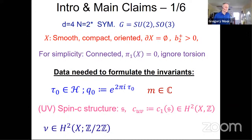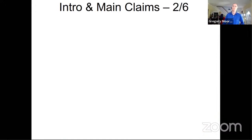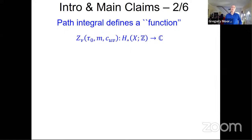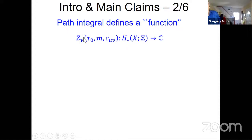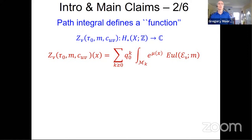We also need an 't Hooft flux — a vector in this vector space over the field of two elements — and finally a homology orientation, namely an orientation of H2 of X over R. So when you have all that data, you get a function on the homology of the four-manifold to the complex numbers depending on these data. I put 'function' in quotes because it's really a formal power series.